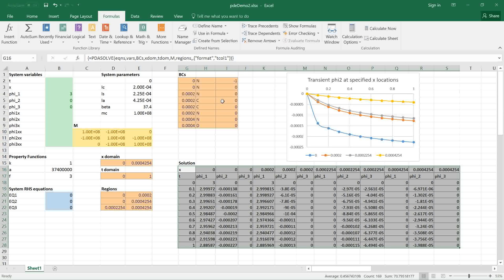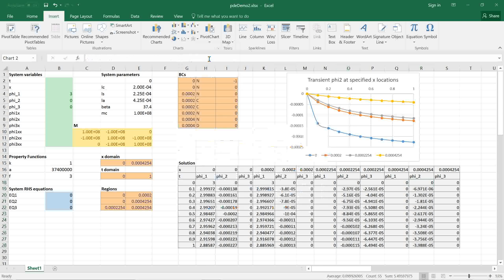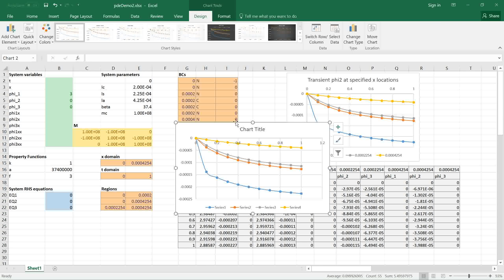To generate the transient plot shown here I simply highlight my T points and the columns I'm interested in plotting. In this case it's phi 2 at x equals 0, phi 2 at x equal LC, phi 2 at x equal LS and phi 2 at x equal LA. Then I can insert a scatter plot and we get exactly the plot shown here.